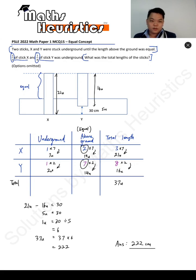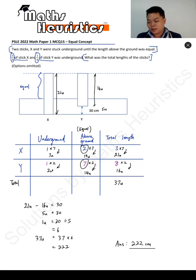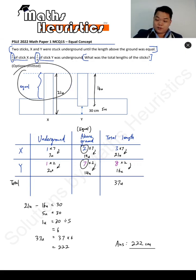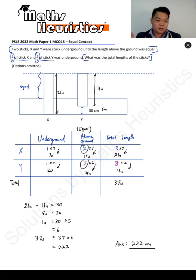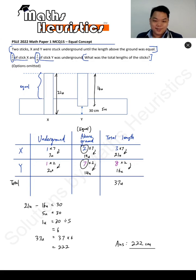One of our students practiced Paper 1 with us so well that he had 25 minutes remaining. He couldn't see that he needed to apply the equal concept, so for this MCQ he took all the options and worked backwards and eventually got the answer.